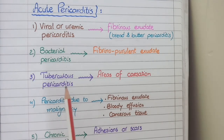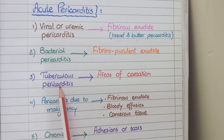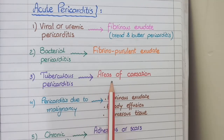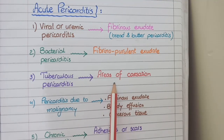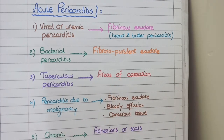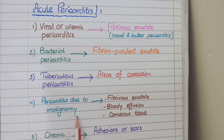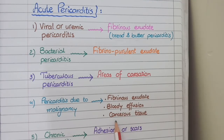In tuberculous pericarditis caused by Mycobacterium tuberculosis, you will find areas of caseous necrosis in the pericardium, resembling cheesy or fatty material. If pericarditis is due to infiltration of metastatic cancer cells, then you will see fibrinous exudate, bloody effusion, and cancerous tissue deposited in the pericardium.